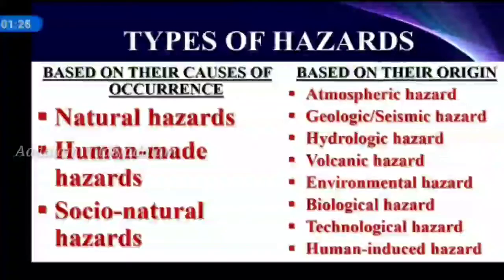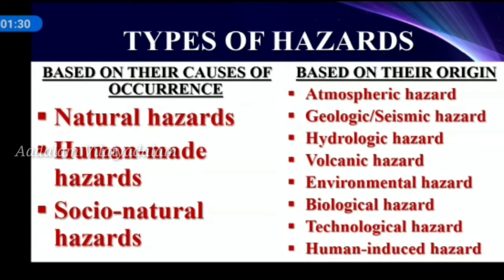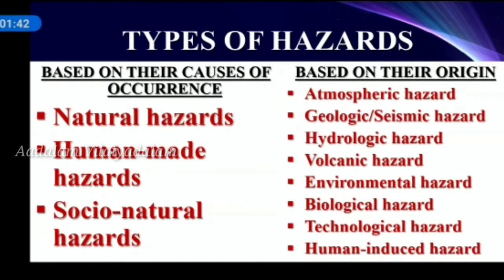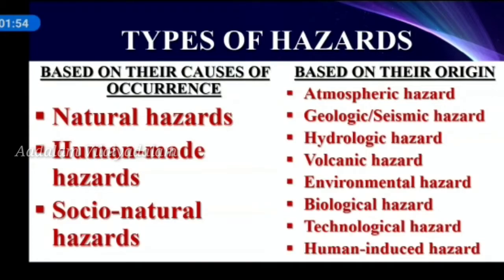Now let us know about the types of hazards. Hazards can be classified into two types: number one, based on their causes of occurrence, and number two, based on their origin. Based on their causes of occurrence, hazards can be broadly classified into three types: natural hazards, human-made hazards and socio-natural hazards. Based on their origin, hazards can be grouped into eight categories: atmospheric, geologic or seismic, hydrologic, volcanic, environmental, biological, technological and human-induced hazard.